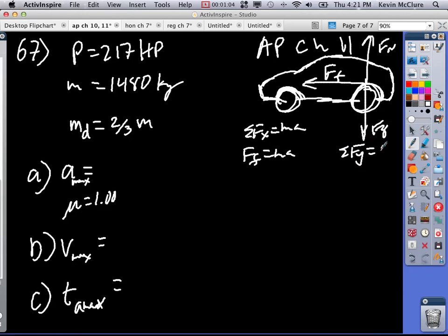Sum of the forces in the Y are equal to zero, right, so we get FN equals FG, and then FN would be equal to two-thirds MG.